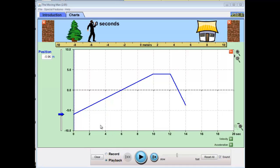So what I've done is I've already set up the motion of the man and created this graph that we see in front of us, this position versus time graph. And we're going to discuss the graph and see if we can predict what his motion was when I made the graph originally.